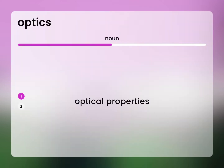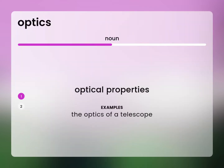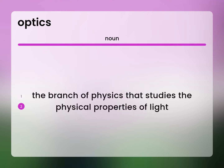Optical Properties. The optics of a telescope. The branch of physics that studies the physical properties of light.